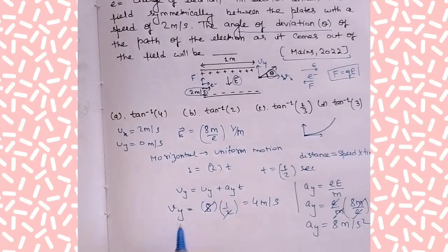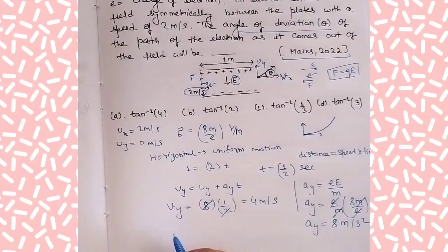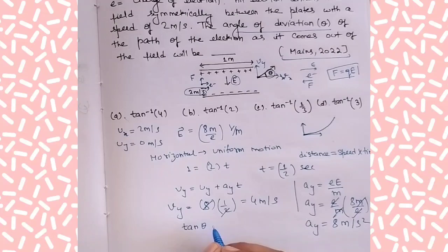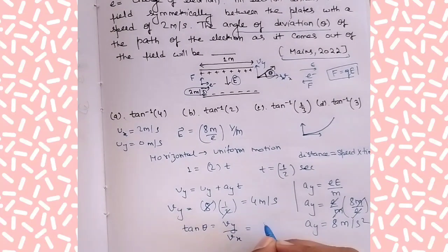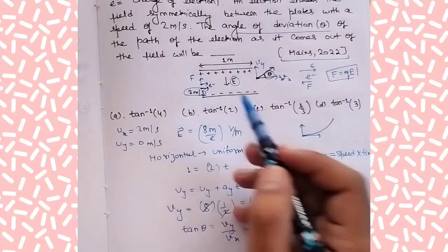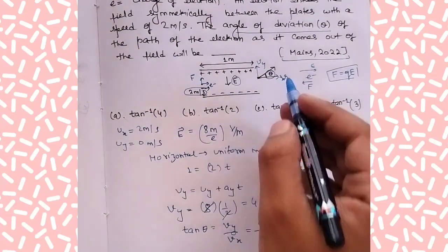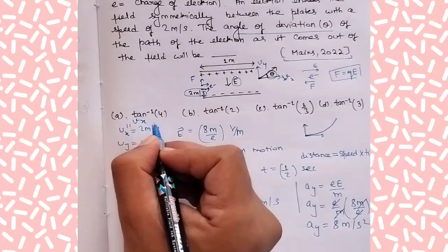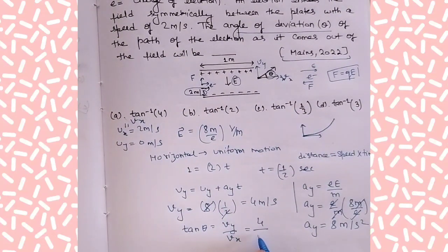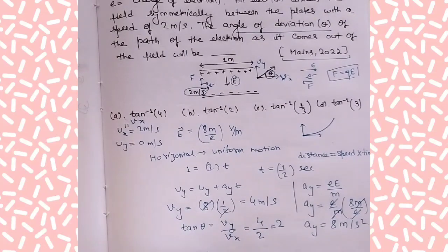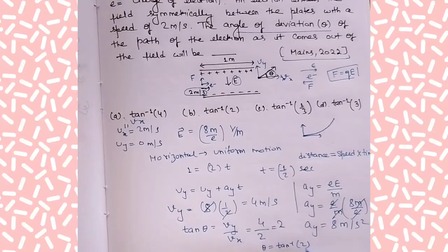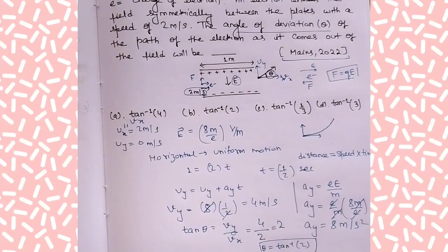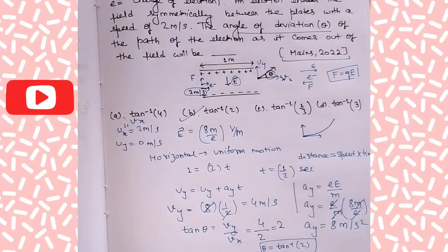To find the angle of deviation, we apply tan θ = vy/vx. vy is 4 and vx is 2, since horizontal motion is uniform and vx = ux = 2 m/s. So θ = tan⁻¹(2). Looking at the options, option B is the correct answer. That's all for this video, thank you.